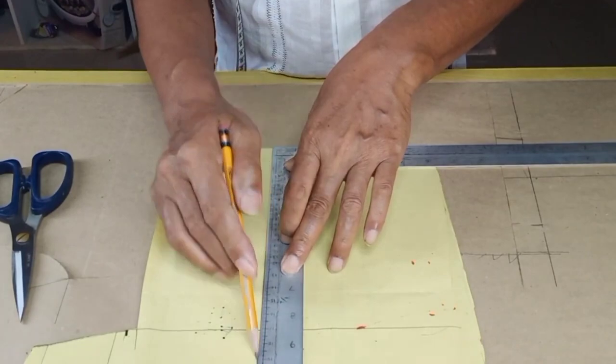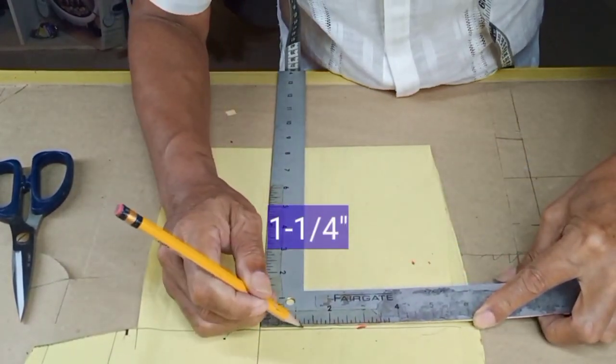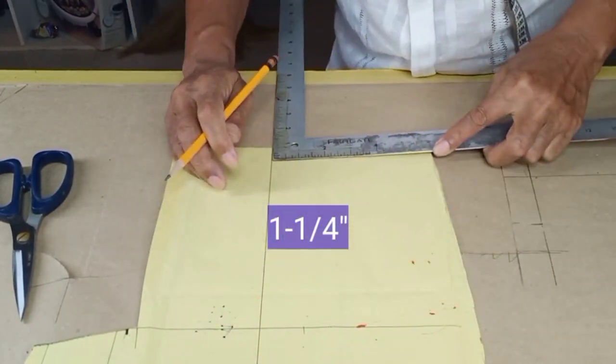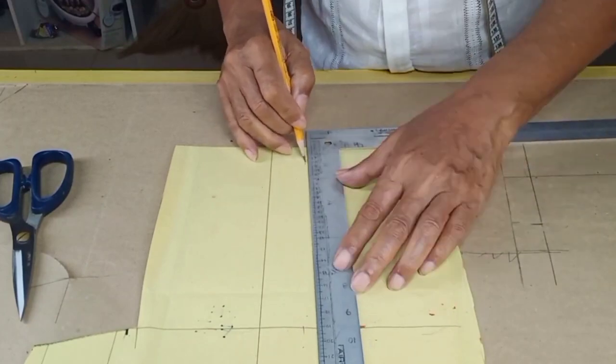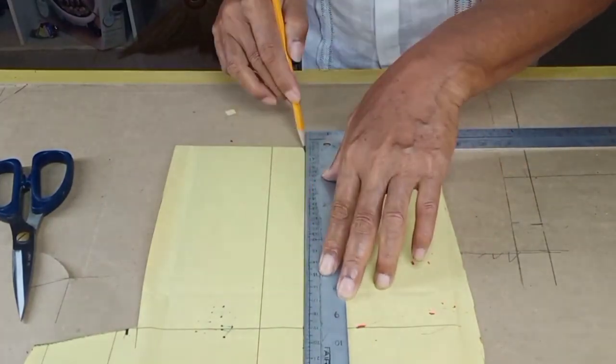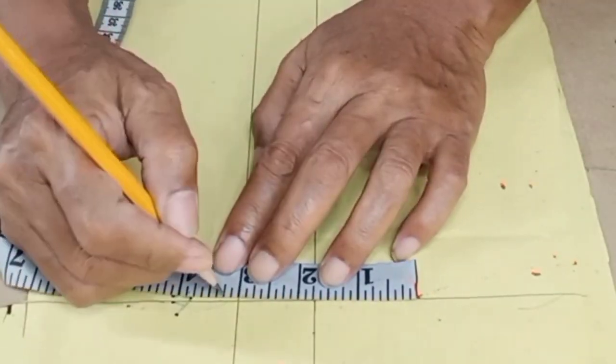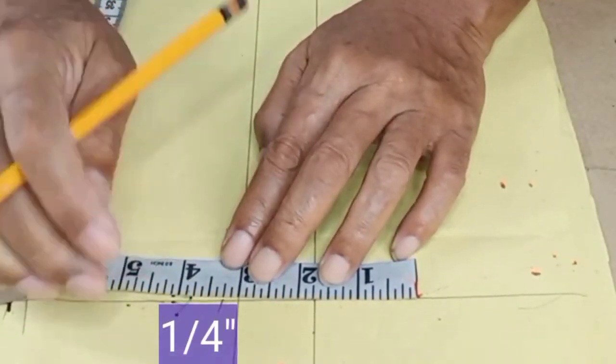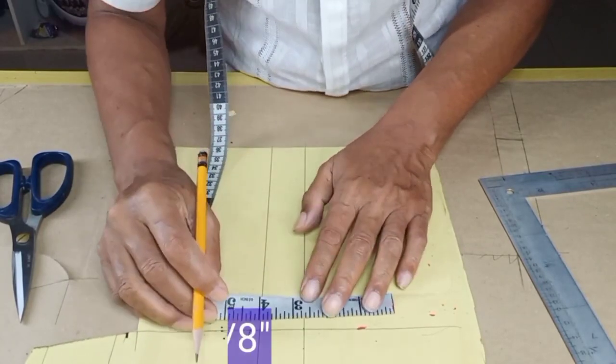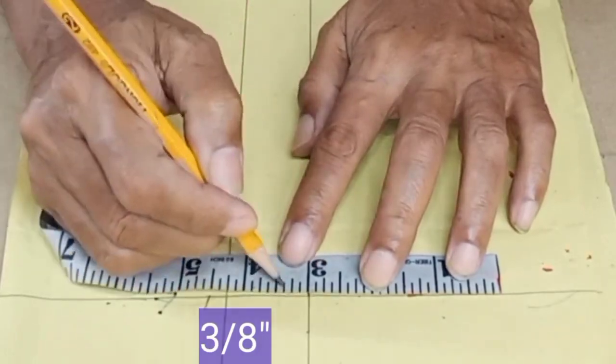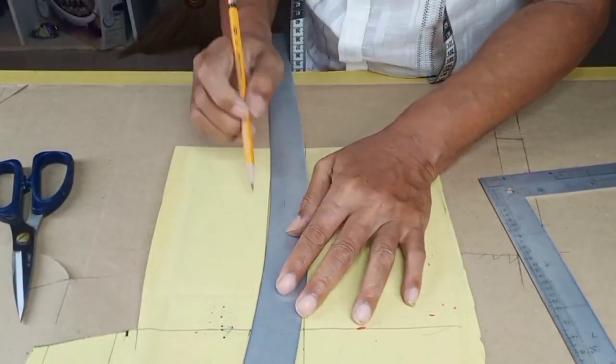Let us draw again a perpendicular line. The width of the stand is one and a quarter inches. Connect it to draw a second line. At the first line, add one quarter of an inch. Also at the second line. This time it is three eighths of an inch to be added upward. Then draw curves on both lines.